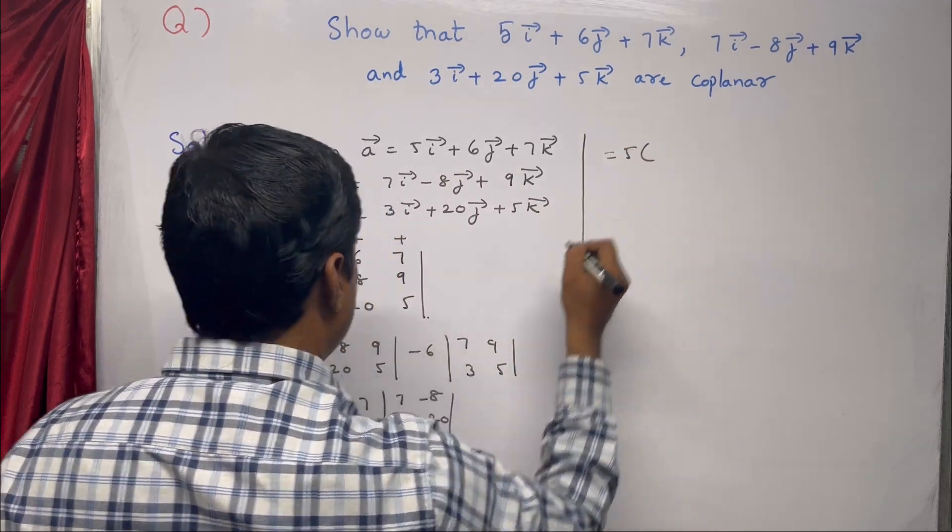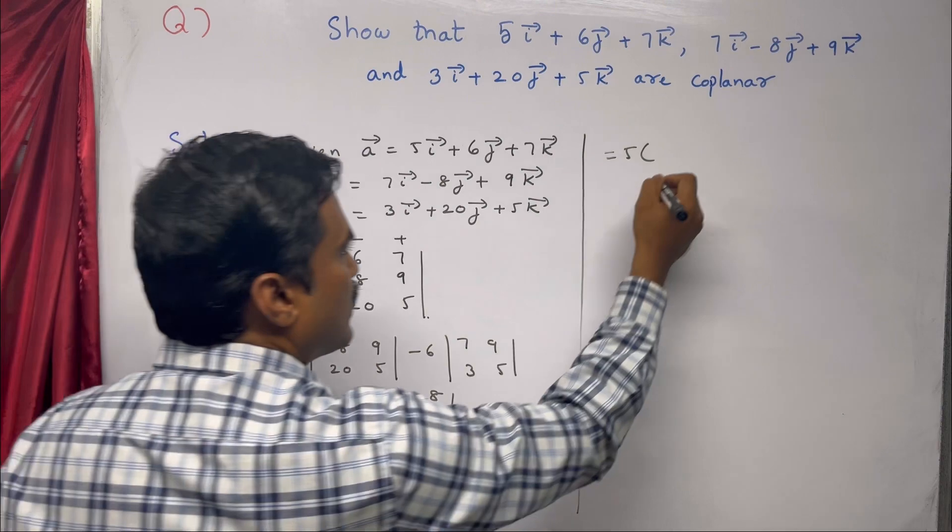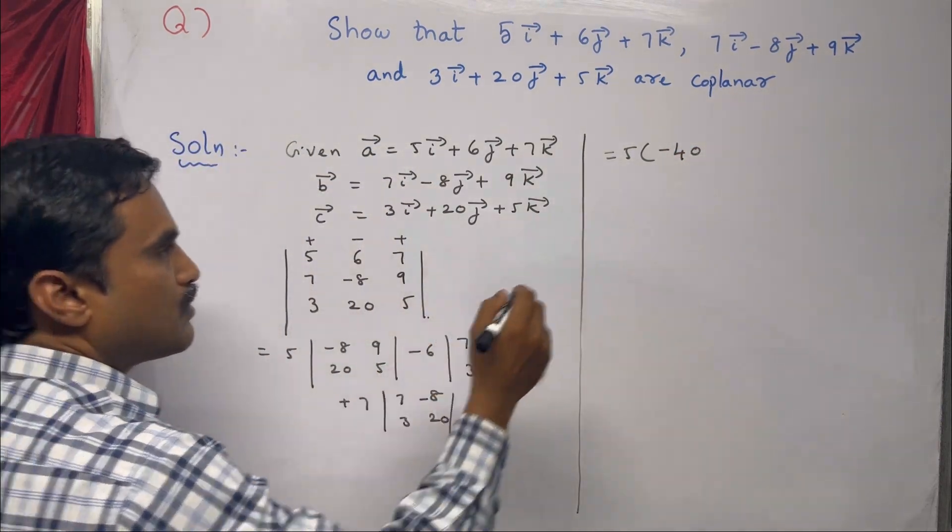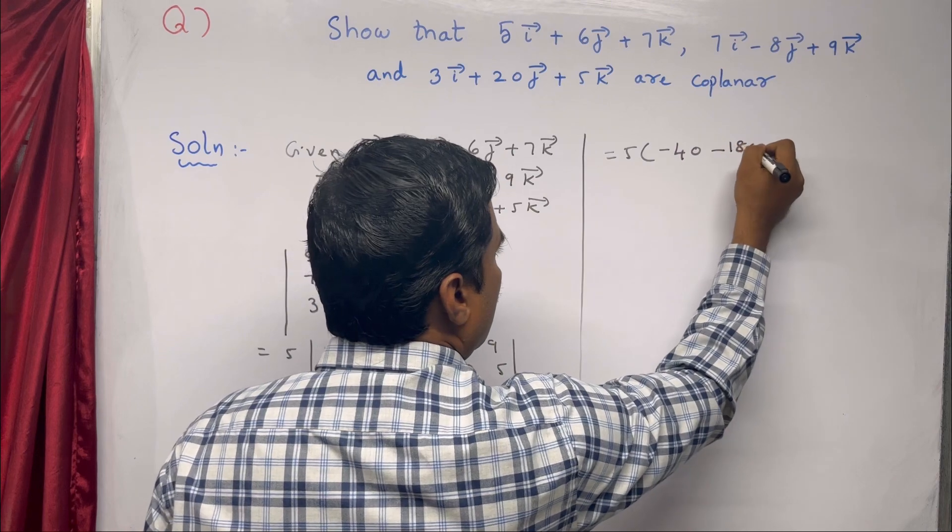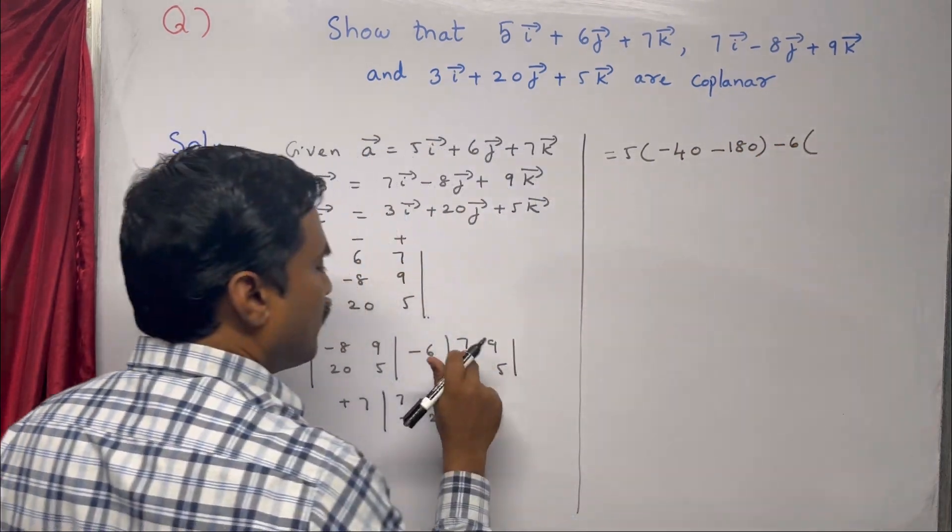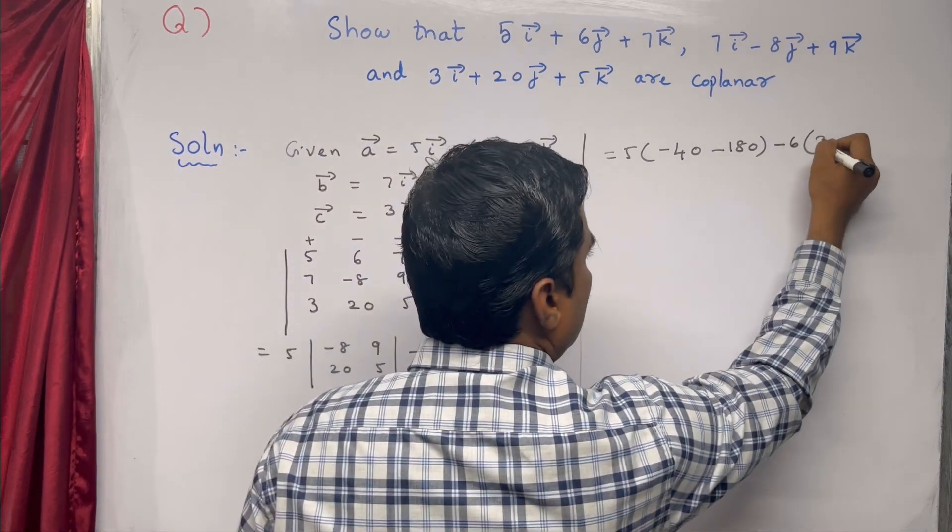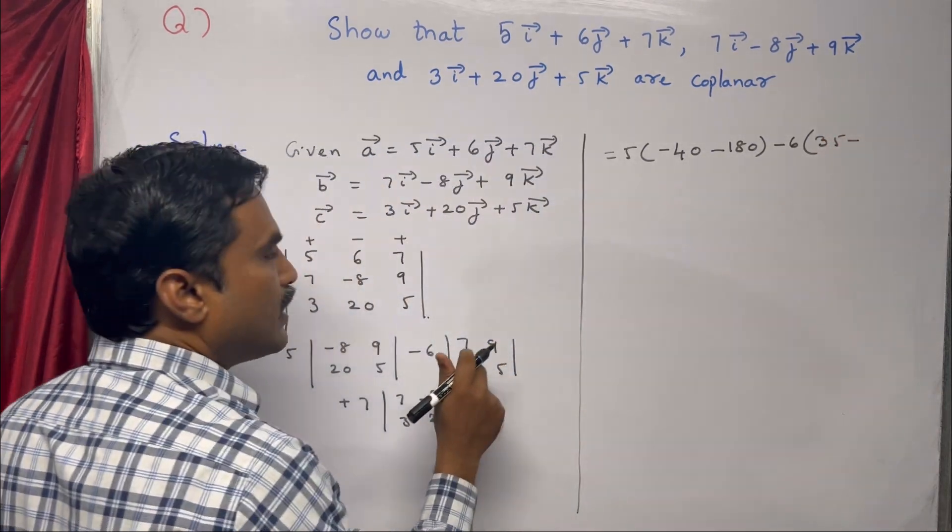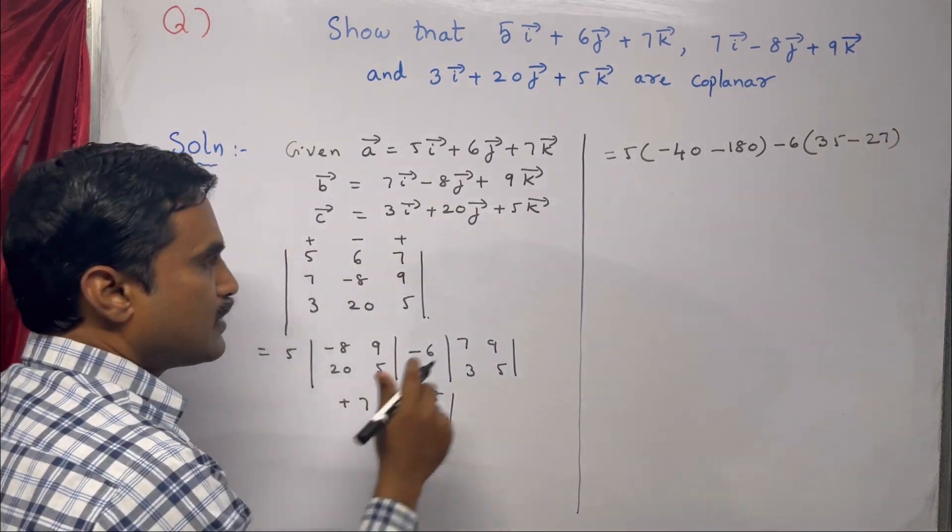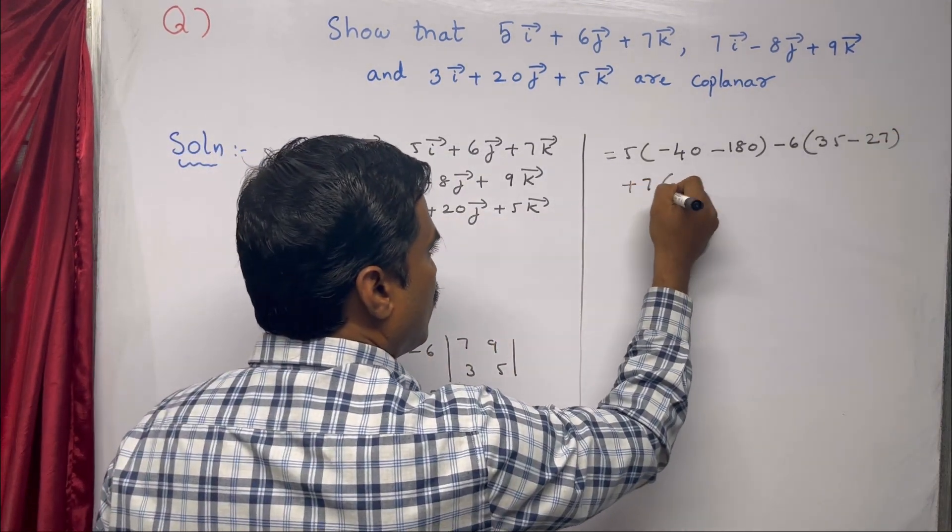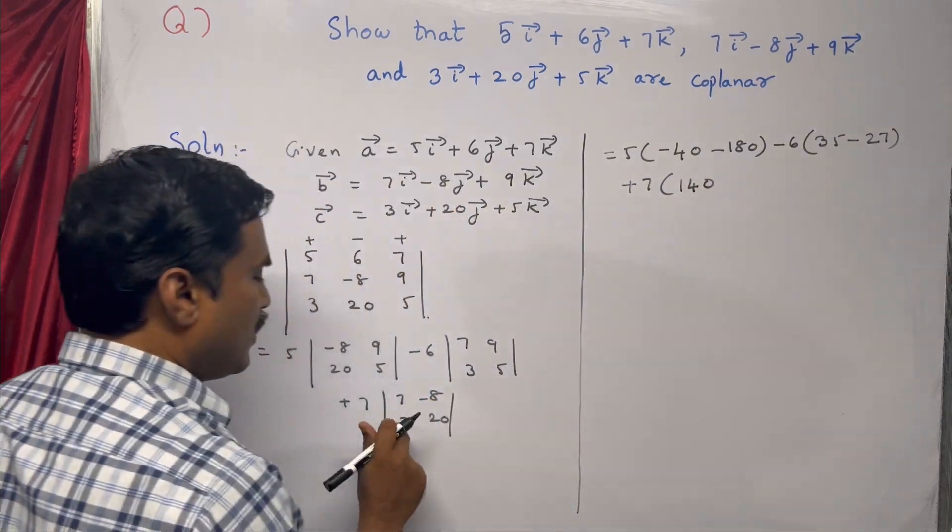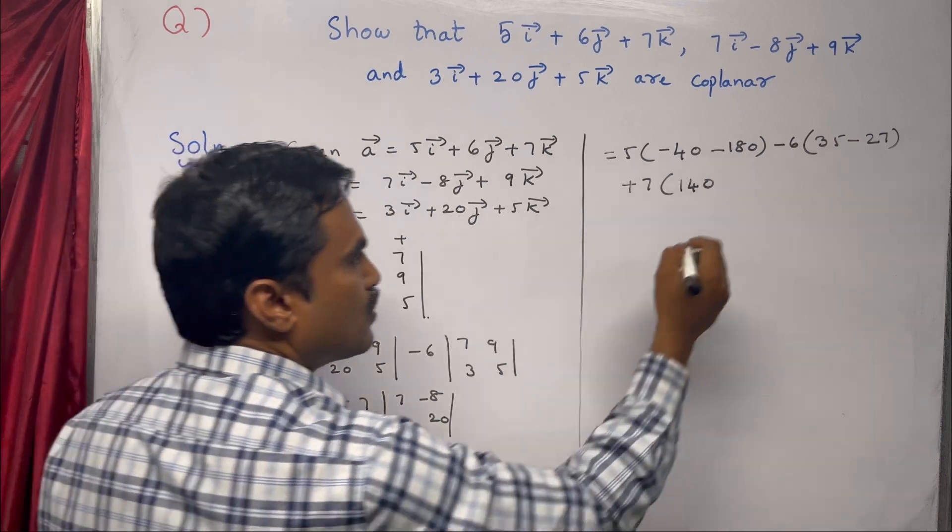This equals 5 times [(-8)(5) minus (9)(20)] which is -40 minus 180, minus 6 times [(7)(5) minus (9)(3)] which is 35 minus 27, then plus 7 times [(7)(20) minus (3)(-8)] which is 140 plus 24.